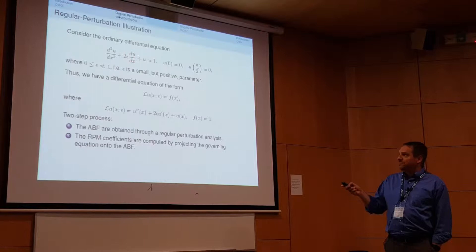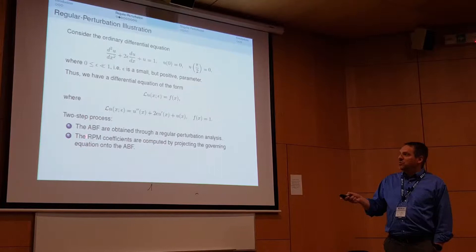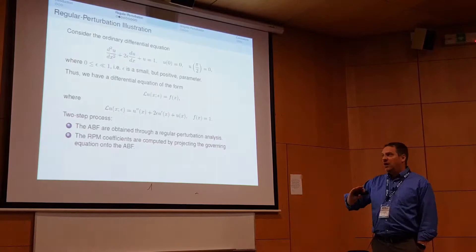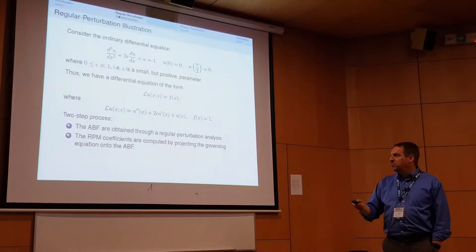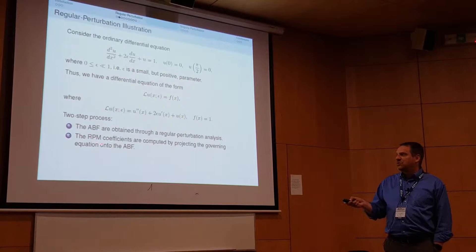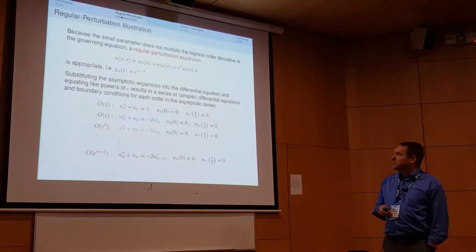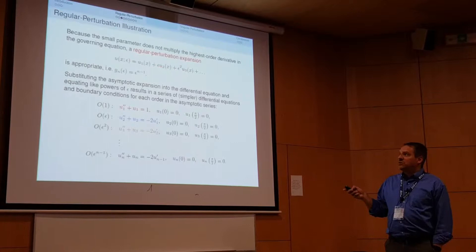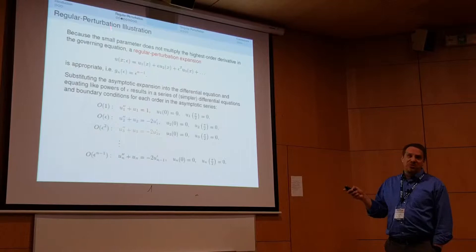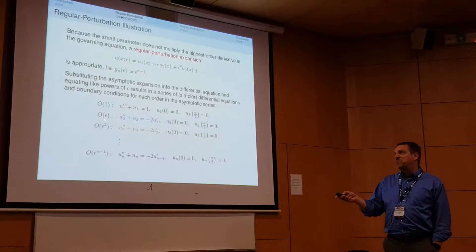Here's a simple second-order ODE where the small parameter multiplies the first-derivative term, making it a regular perturbation problem. I write down the differential operator and run through the two steps: first, standard asymptotic methods to get the asymptotic basis functions; then Galerkin projection to get the RPM coefficients. The gauge functions are integer powers of epsilon, so we substitute the regular perturbation expansion into the ODE and obtain the order-one, order-epsilon, and order-epsilon-squared problems.